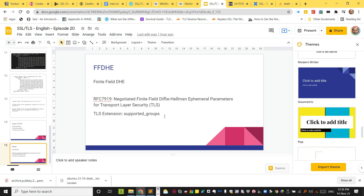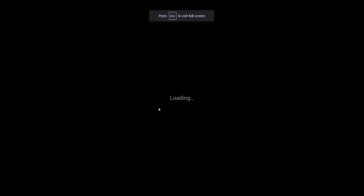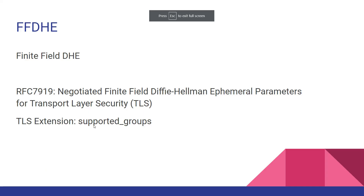When the client sends the client hello message, it will indicate in the supported_groups extension which finite field Diffie-Hellman groups it supports — whether it supports 2K, 3K, 4K, 8K key, etc. The server will choose one among what the client supports, and then in the server hello, the server will reply with the supported group TLS extension indicating the chosen size of the Diffie-Hellman ephemeral parameters.